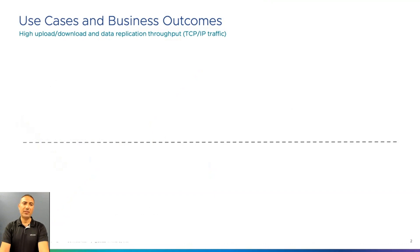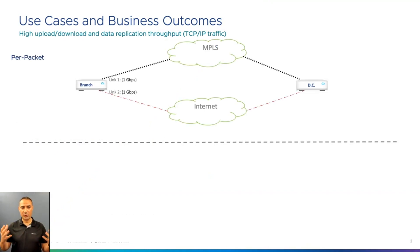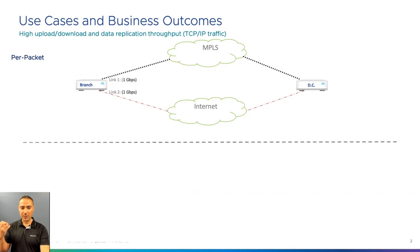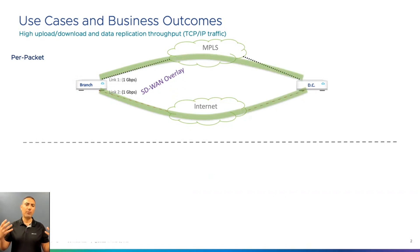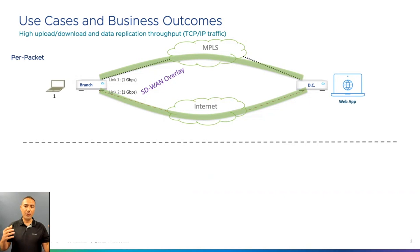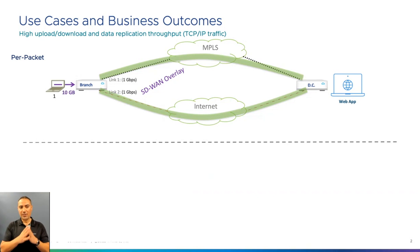I have two examples to explain these advantages. The first one is an upload or download of heavy data between a source and destination, and I'm going to start with pair packet first. I have two SD-WAN devices — a branch and a data center — and two circuits between them with the same speed. We're going to assume a user and a web server where the user is going to send a lot of data from the branch side to the data center side. Let's assume this user would like to send 10 gigabytes worth of data.